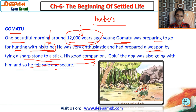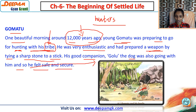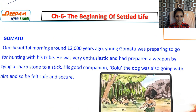In the picture you can see Gomatu and his family - he is getting his weapon ready, some were sitting near the fire and discussing. They don't have a fixed place; they lived in a cave in the jungle area.